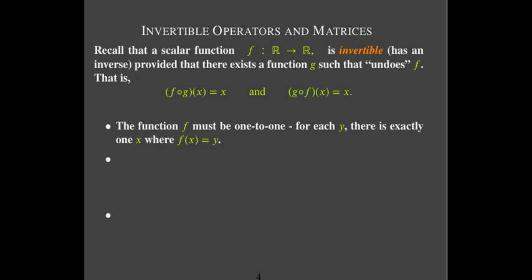For this to happen, f has to be a special type of function — we call it 1-to-1. A function means that for every input there's a unique output; for every x there's only one y. For it to be 1-to-1, you also have to say for every y there's exactly one x where f(x) equals y. That's what it means for a function to be 1-to-1.